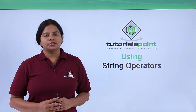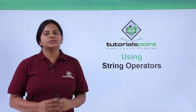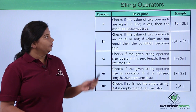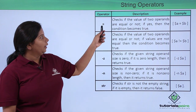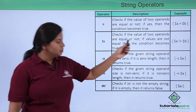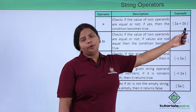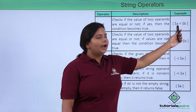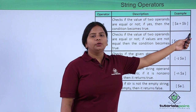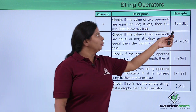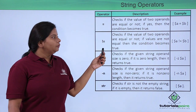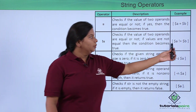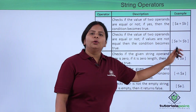Let us check our string operators. As we have already discussed, we can use different kinds of operators with strings. The equals-to operator is used for checking two different values — we have variable A and variable B and we can check whether these variables are equal or not. Same way, we can use the not-equals-to sign to compare both values and define whether they are not equal.